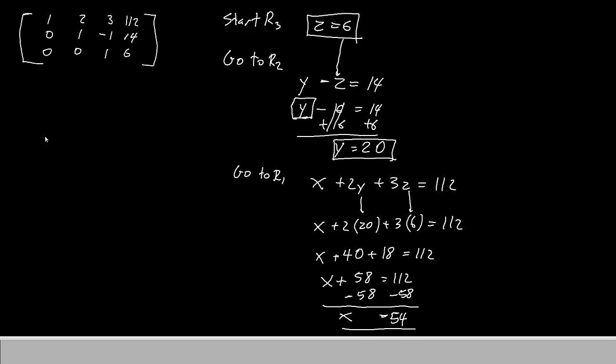So our final answer is this. We have a space for x, y, and z. Our x was 54. Our y is 20 and z is 6. Remember that z was the camp stools, y was the sleeping bags, and x was the tents. And now we have the price of each item. Thank you for watching. We'll see you again next episode.